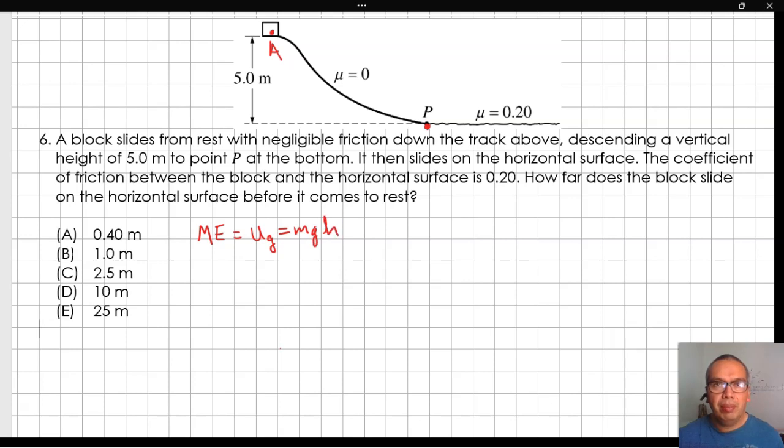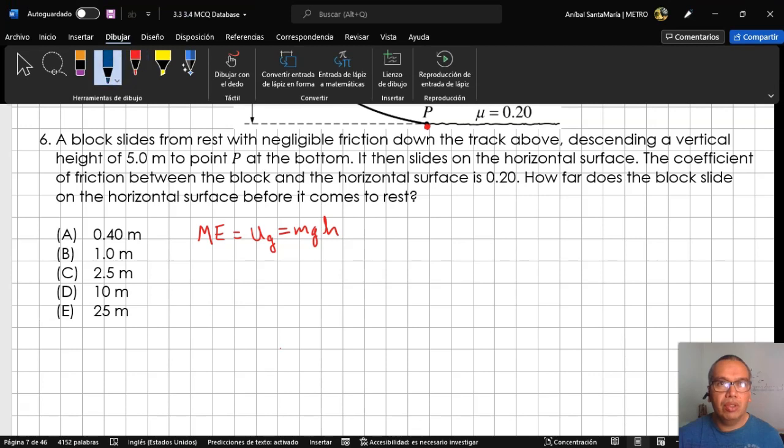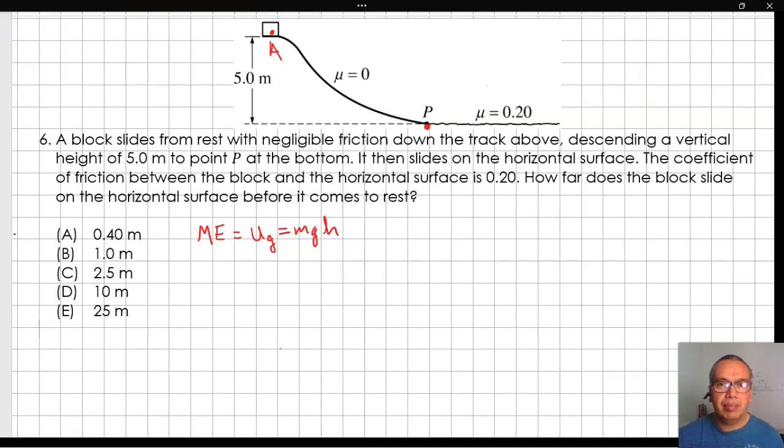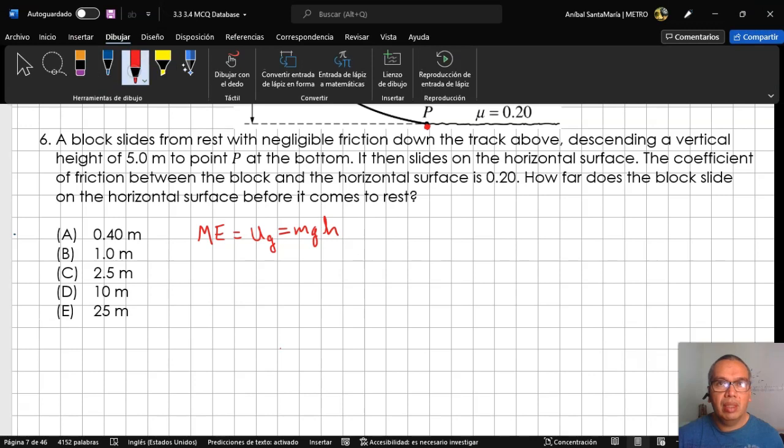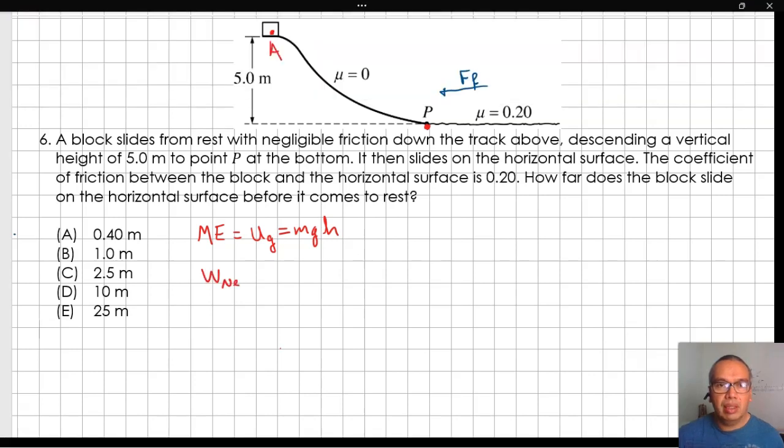From point P on, there is a friction force doing negative work. According to the work kinetic energy theorem, we have that the resultant work is equal to the change in kinetic energy.